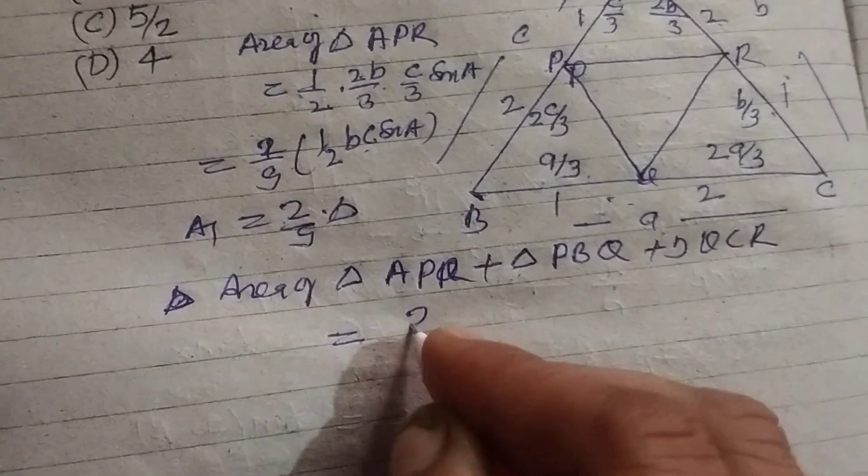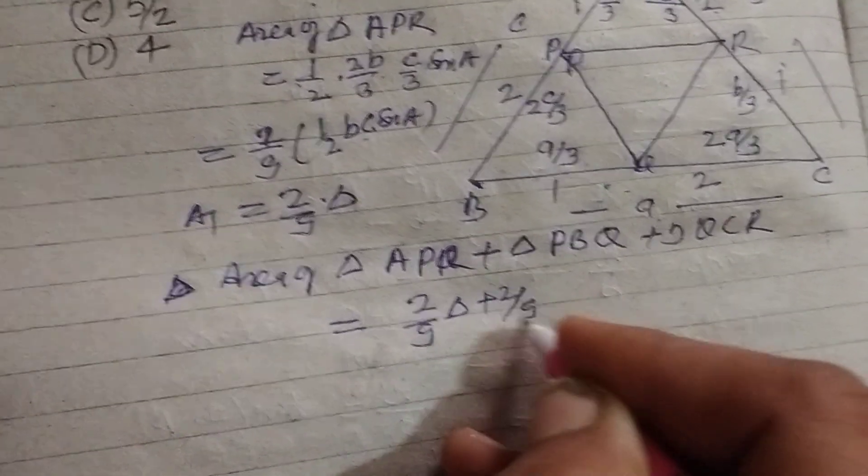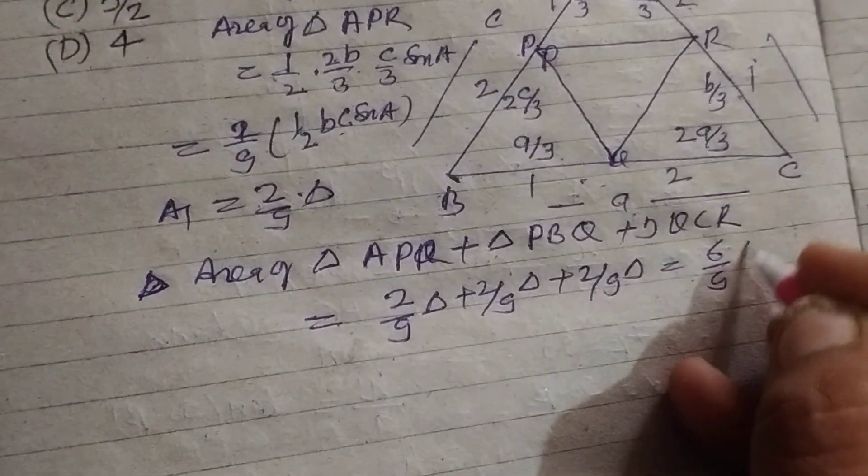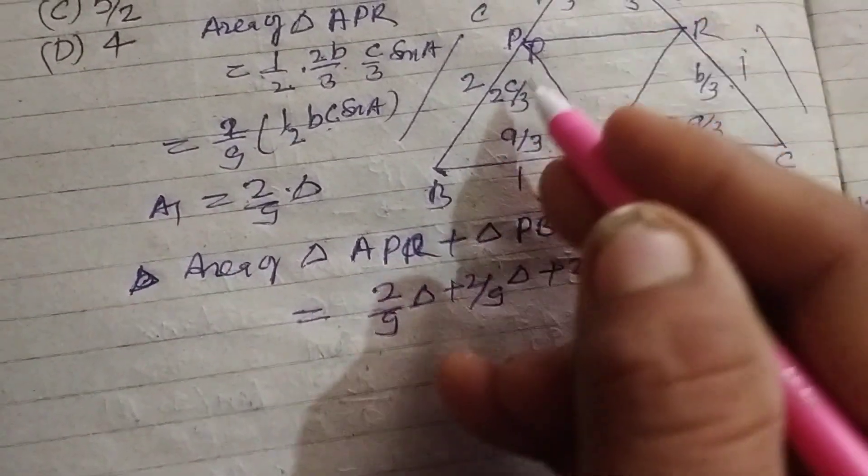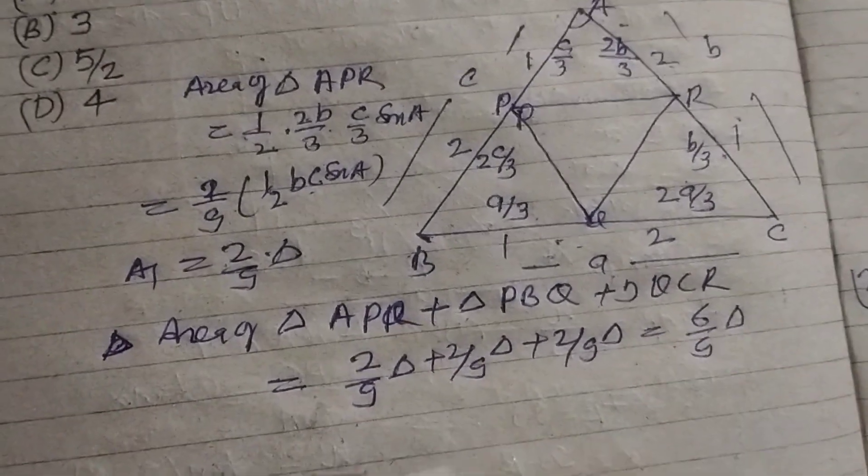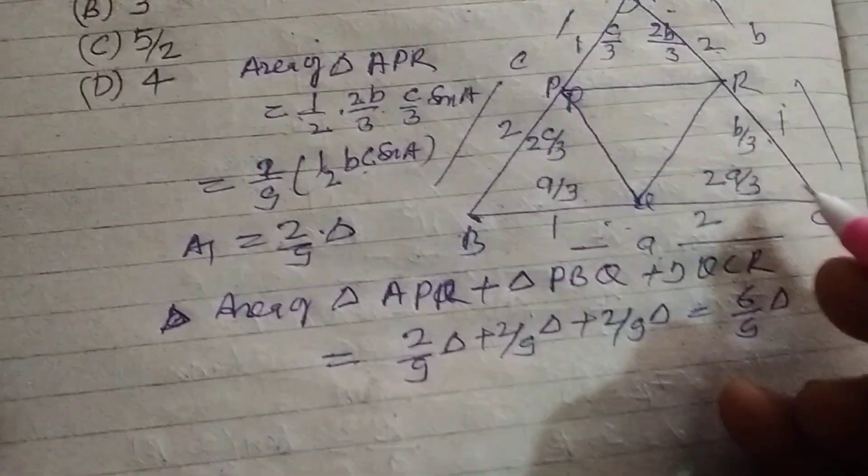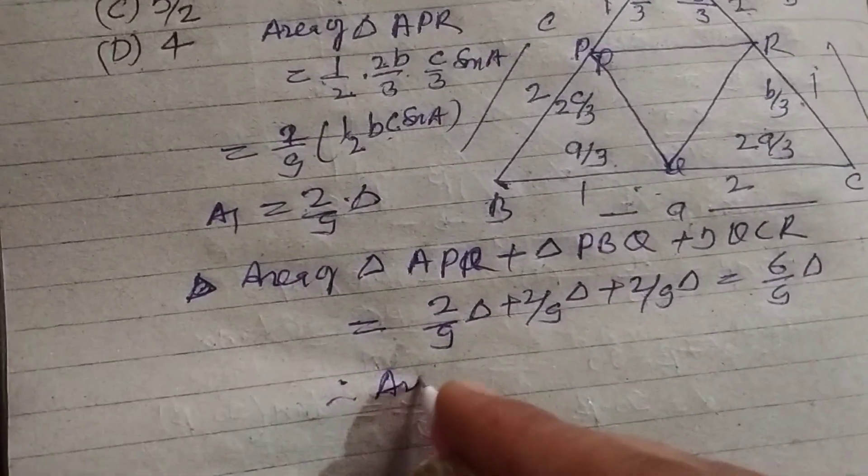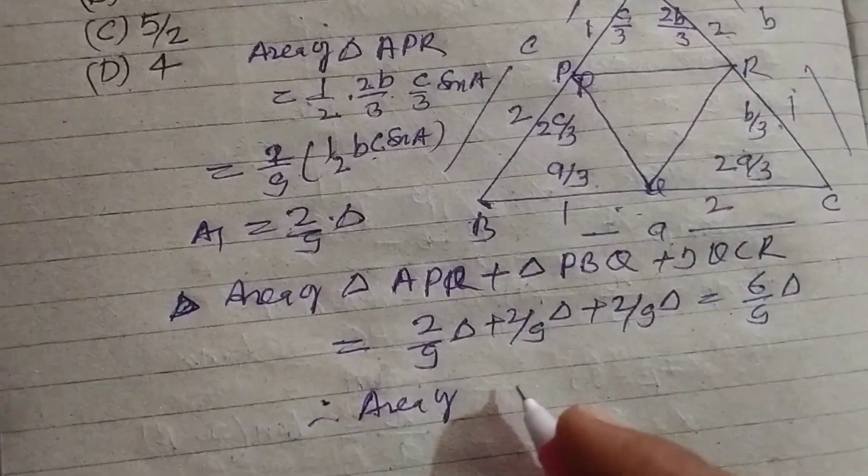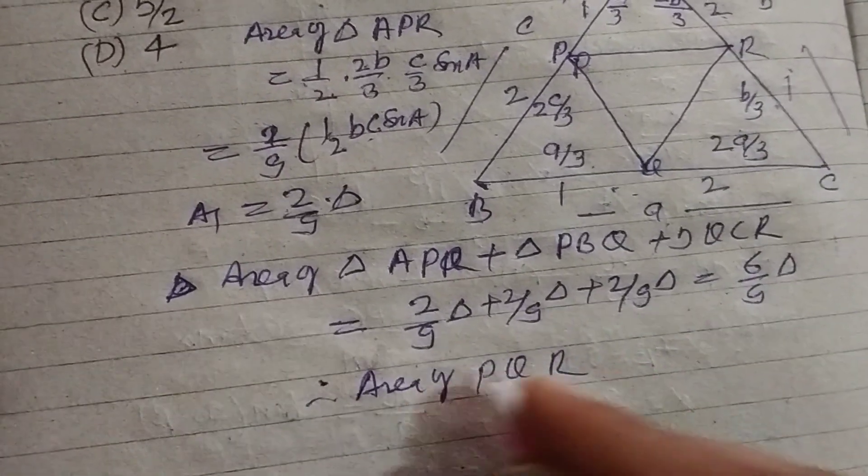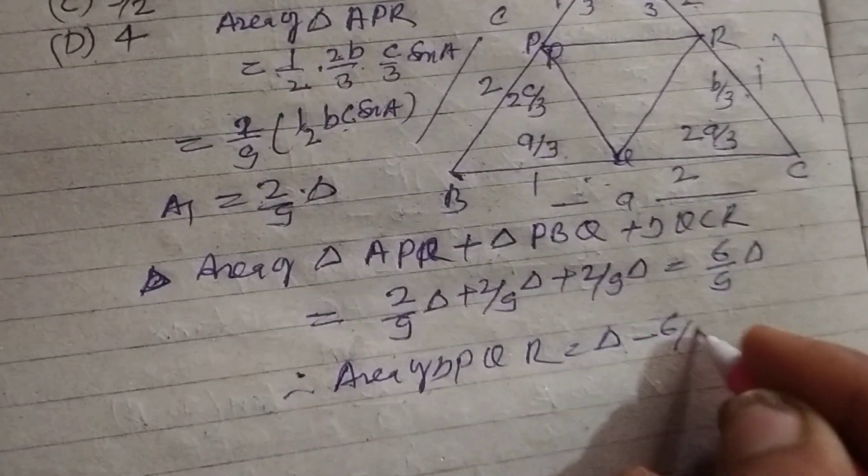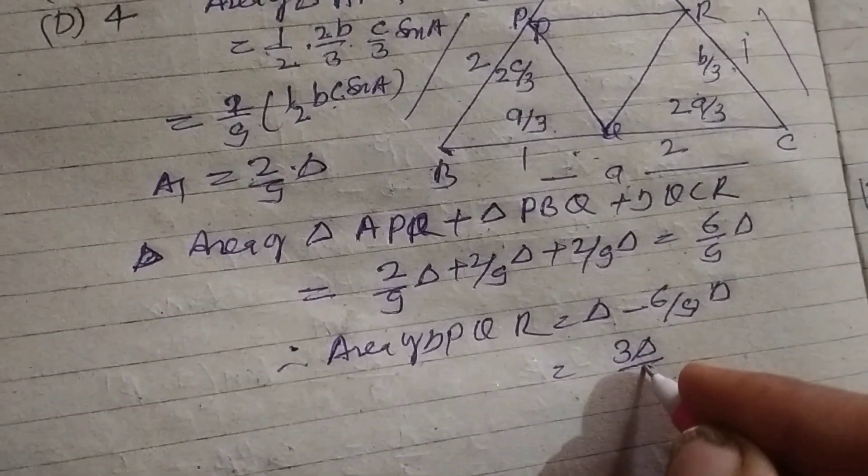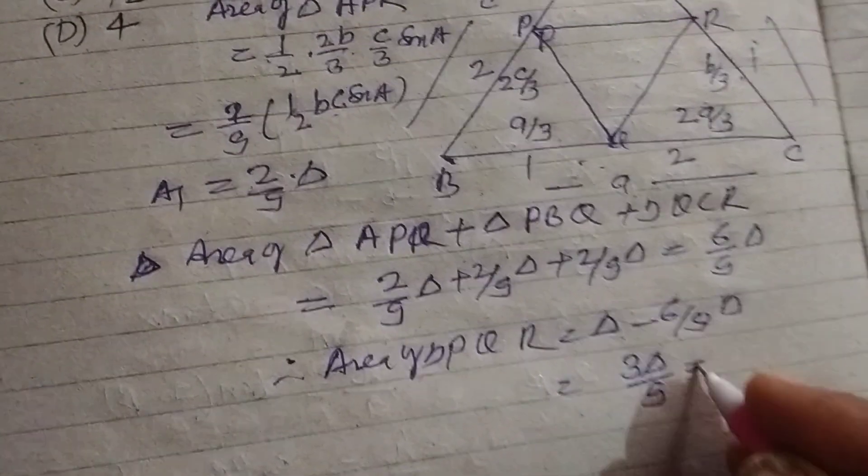This equals 2/9 delta plus 2/9 delta plus 2/9 delta, which is 6/9 delta. The total triangle area is delta. Therefore, area of triangle PQR equals delta minus 6/9 delta, which is 3/9 delta.